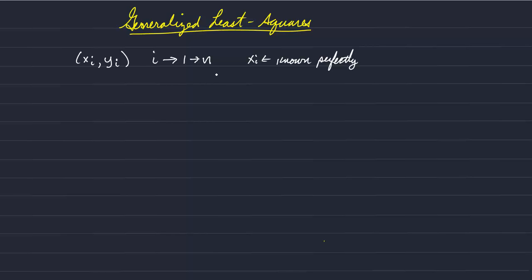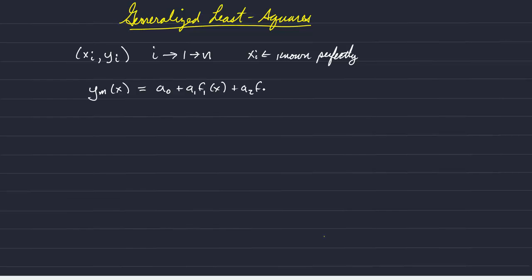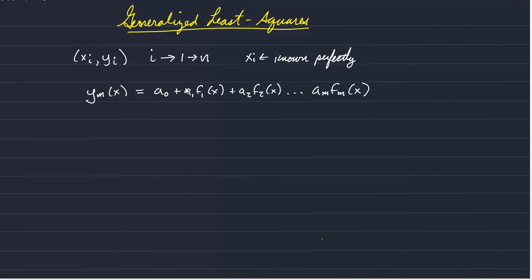Therefore, we want to find a curve or function that describes how Y varies with X. And so our model function has the form of a sum of basis functions of X. In general, we have M basis functions multiplied with M coefficients. These are our A's.